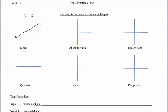Absolute value — the equation is y equals absolute value of x. At any point you might want to self-assess by stopping the video, writing down what you think, and then turning the video back on. The square root function starts at the origin and heads off slowly increasing, and the equation is y equals square root of x.